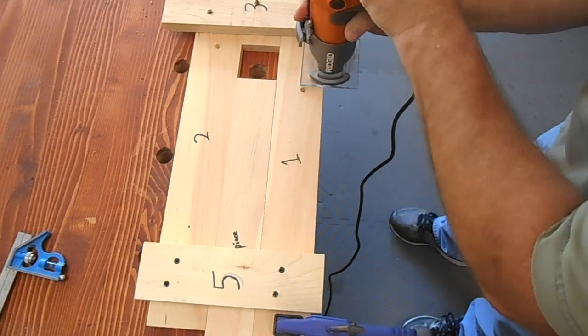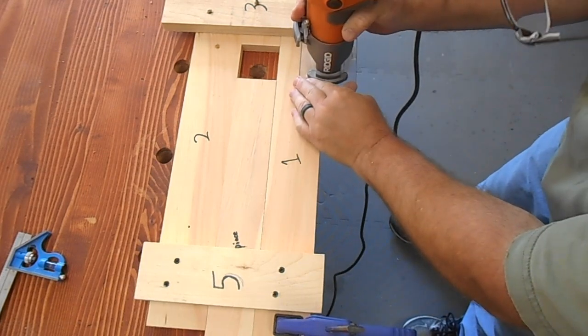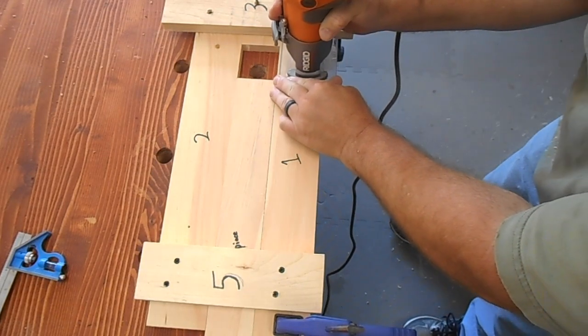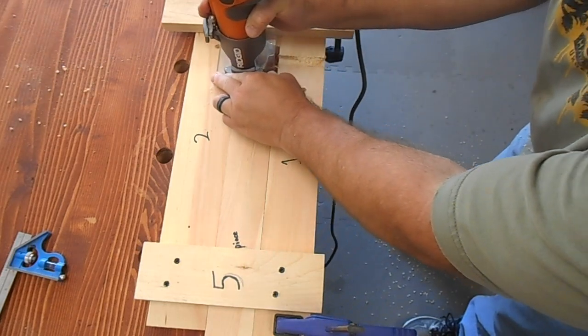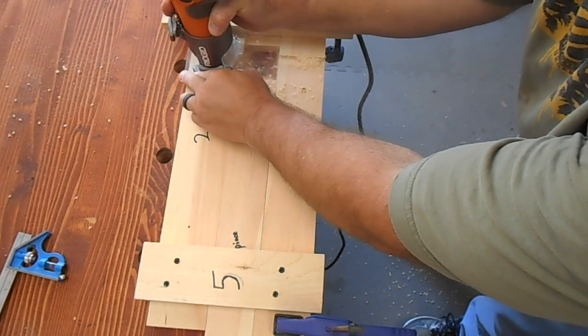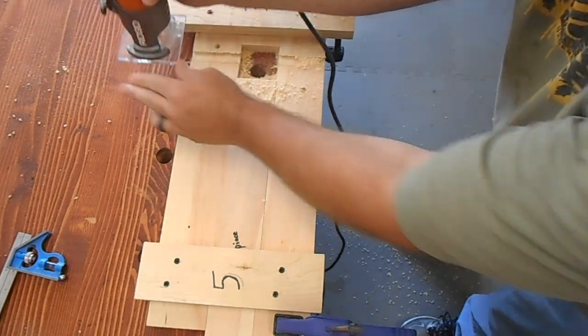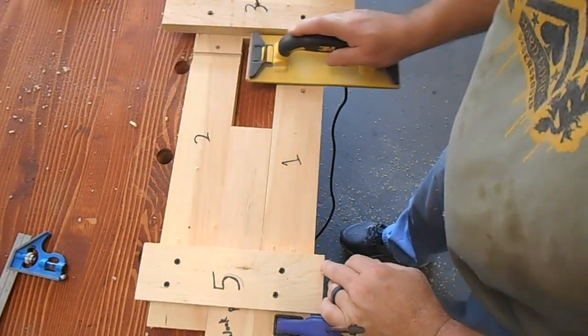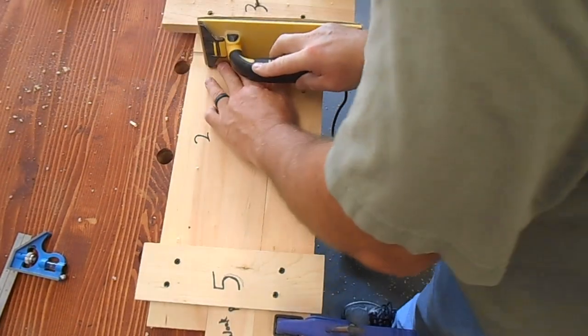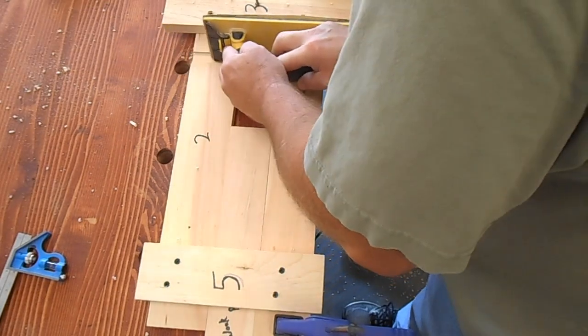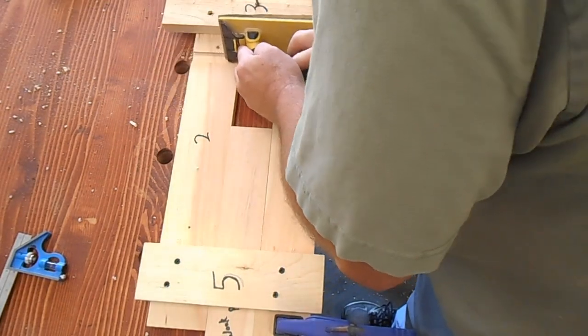And then holding the router against the fence, just turn it on and make a pass across both rails. Then you'll need to take a little sandpaper or something to clean those fuzzies up because you will need to be able to see the defining line that the bit makes because that's what you're going to line up against.